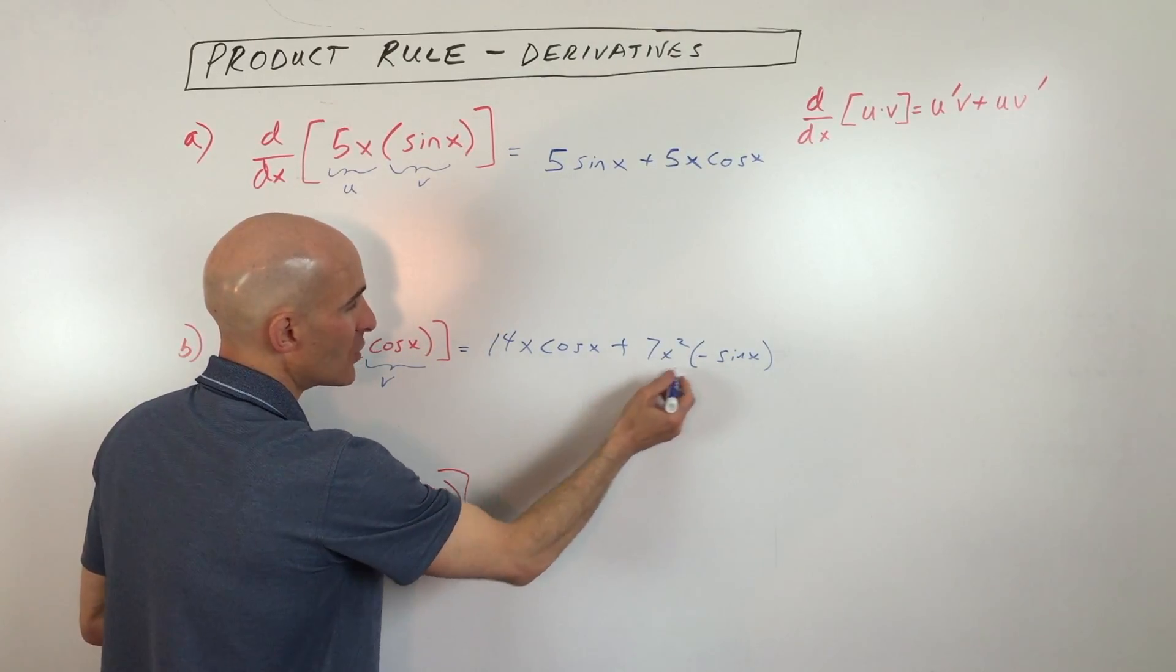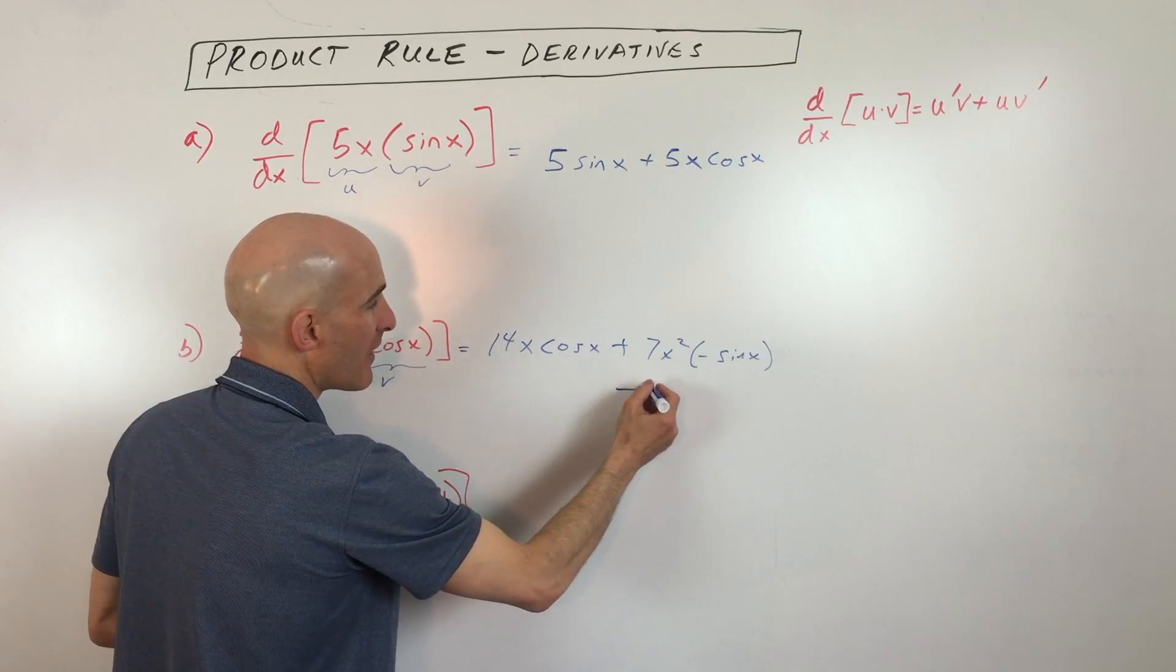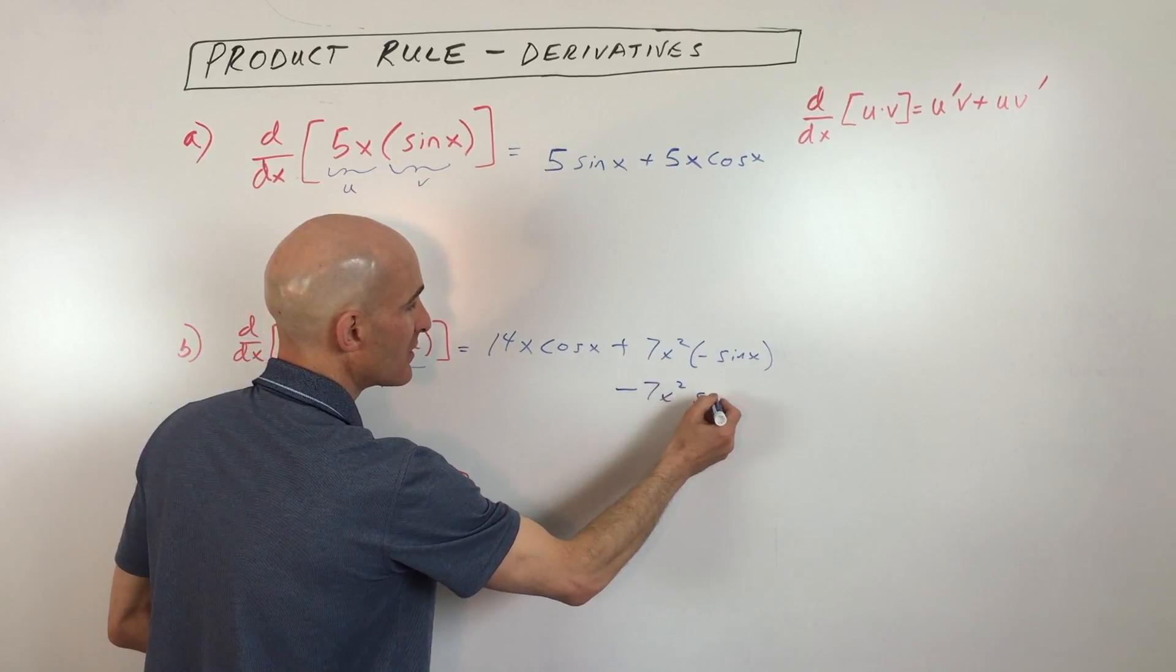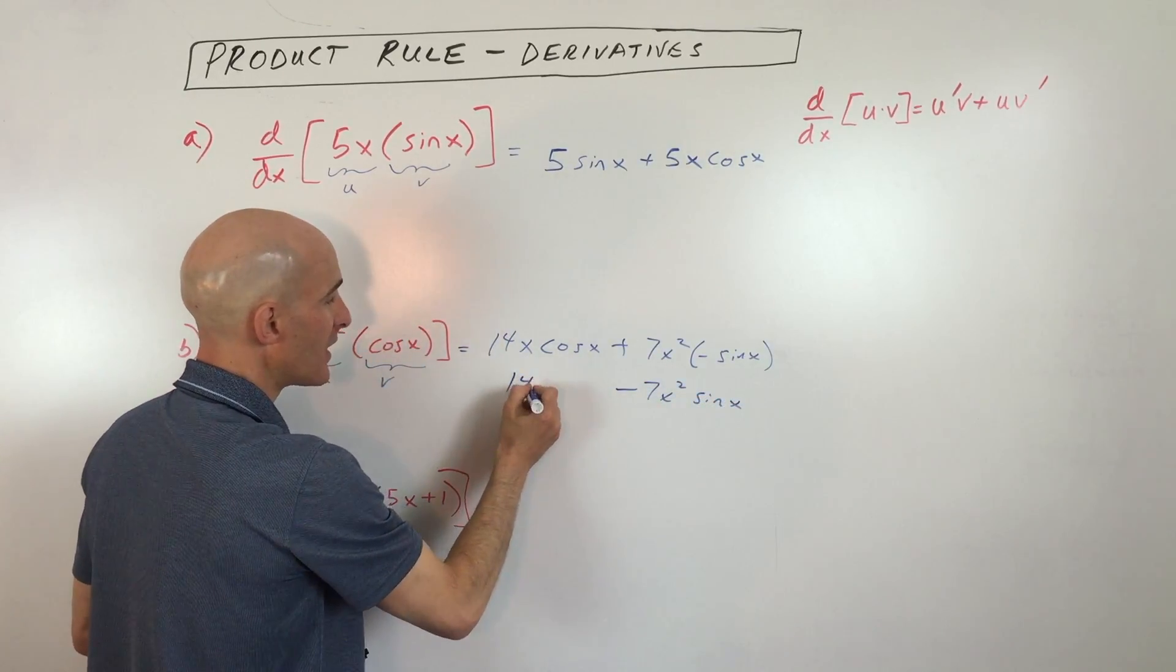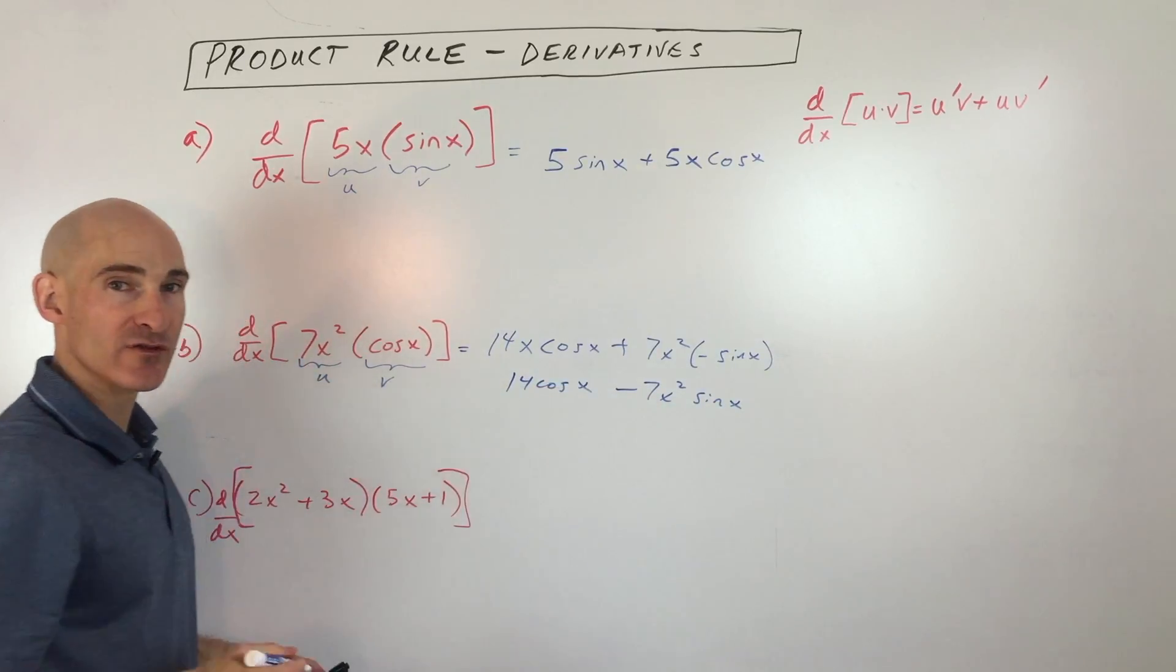And then what we can do is the positive and the negative, that's just going to become minus 7x squared sine x. So we can kind of clean it up or condense it a little bit. So that's your derivative.